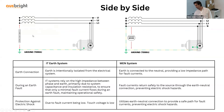Side by side, you can see isolated versus connected. IT systems during an Earth fault, because of the high impedance between the fault and ground, mean that the first Earth fault will result in very low current.